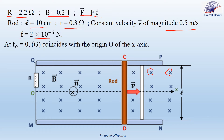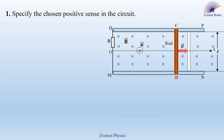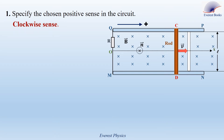At T₀ = 0, the center of mass G of the rod is at the origin O of the x-axis. Number 1: specify the chosen positive sense in the circuit. The positive sense is determined by the unit vector N, which is directed inward (denoted by the cross symbol). When curling the fingers of the right hand with the thumb pointed inward, the fingers curl in the clockwise sense, which represents the positive sense.